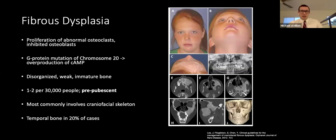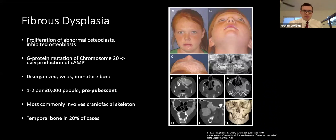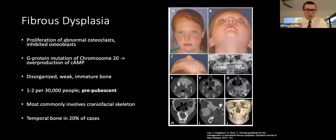Fibrous dysplasia is a spontaneous, non-inherited disorder of osteoclast and osteoblast function, characterized by replacement of normal bone with a variable amount of fibrous tissue and woven bone. Underlying this is a G-protein mutation on chromosome 20, which leads to overproduction of cyclic AMP. This causes hyperproliferation and incomplete differentiation of marrow stromal cells into abnormal osteoclasts, inhibits osteoblast-specific genes, and stimulates cytokines that promote bone resorption, ultimately leading to disorganized, weak, and immature bone.